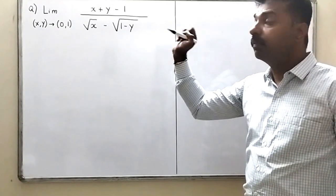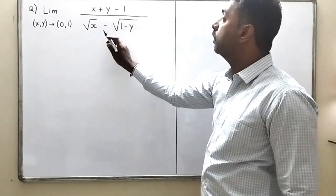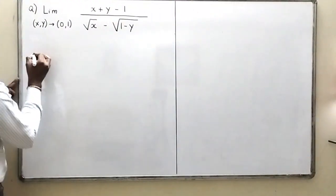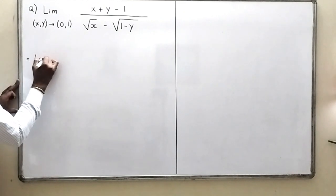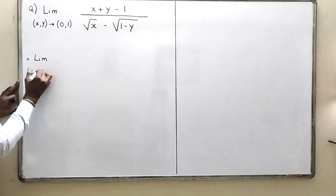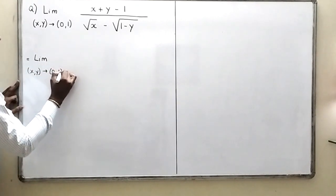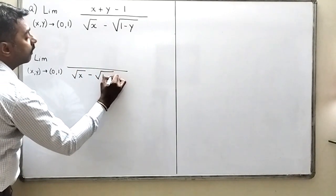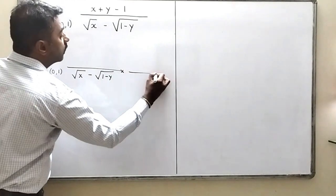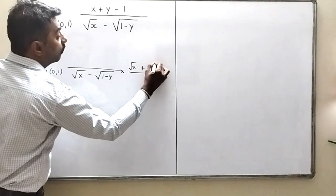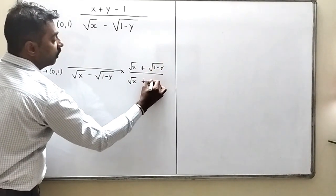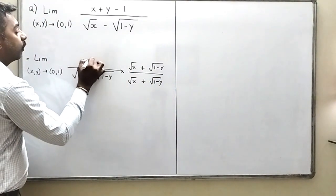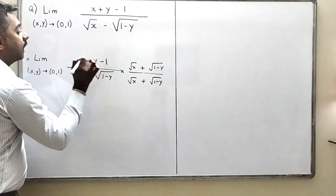The last problem is the limit as (x,y) → (0,1) of (x + y − 1) / (√x − √(1 − y)). We use the standard technique of multiplying by the conjugate of the denominator. The conjugate of (√x − √(1−y)) is (√x + √(1−y)), so we multiply and divide by that, keeping the numerator x + y − 1 as it is.